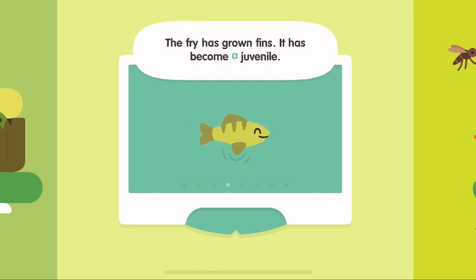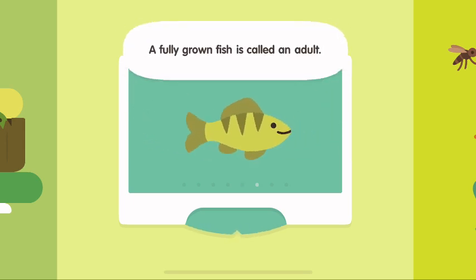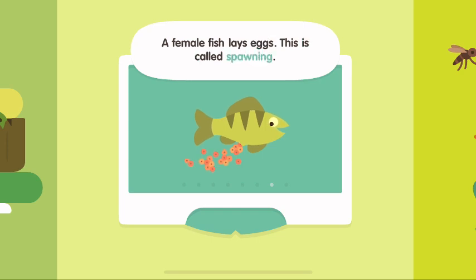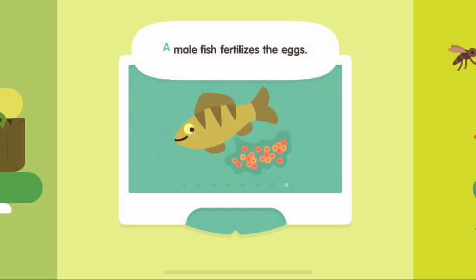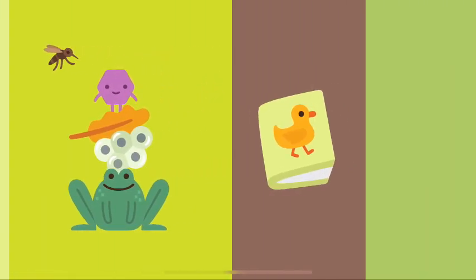It has become a juvenile. The juvenile starts to grow faster. Now it is called a smolt. A fully grown fish is called an adult. A female fish lays eggs. This is called spawning. A male fish fertilizes the eggs. All fish begin life.